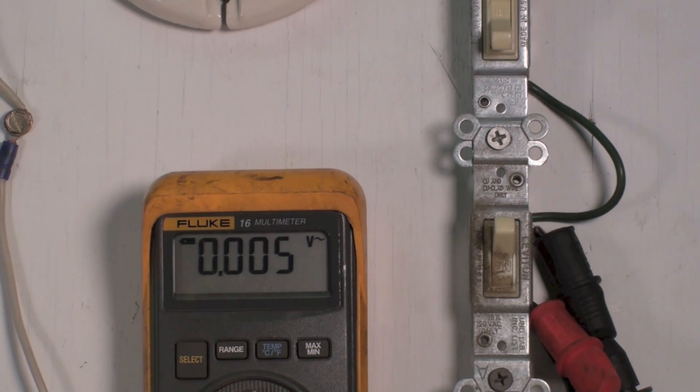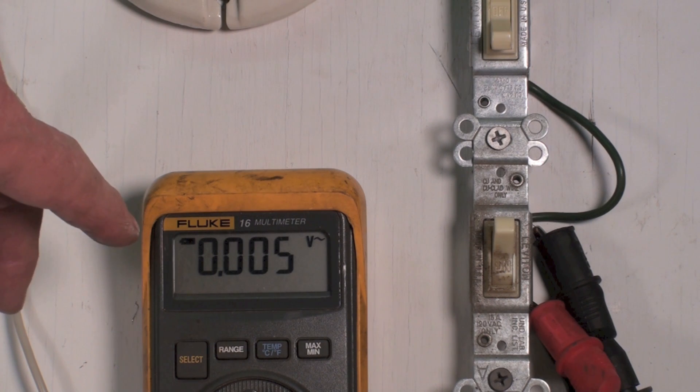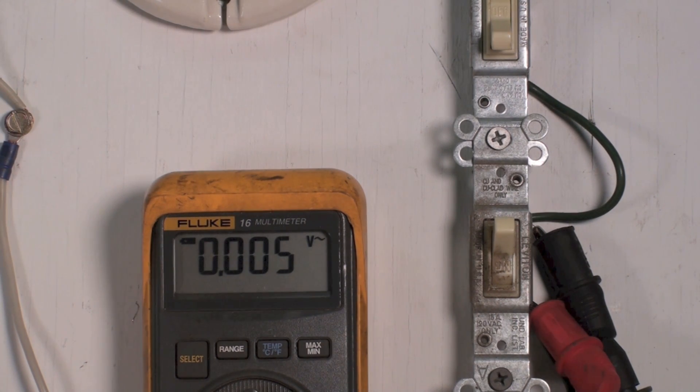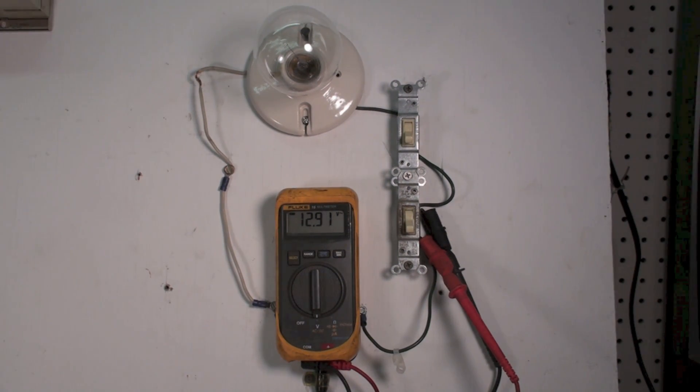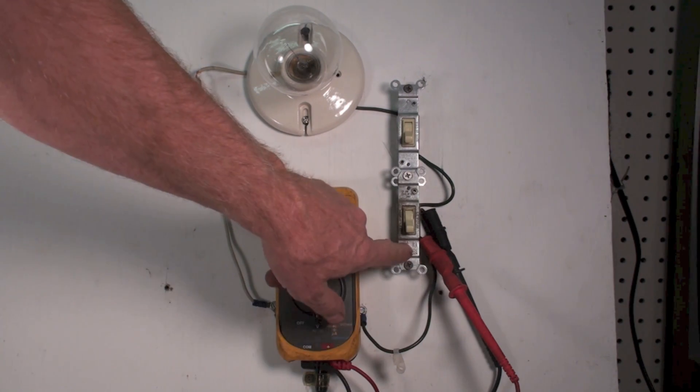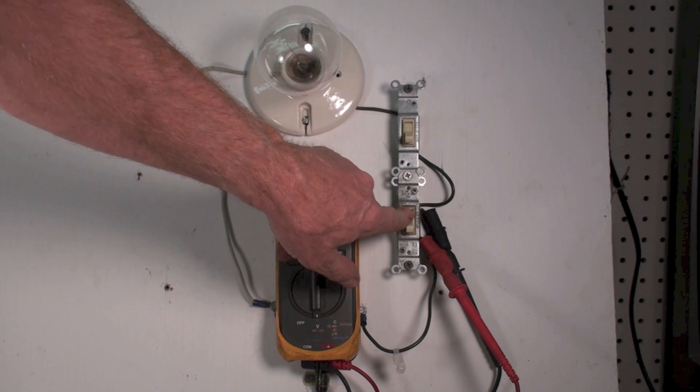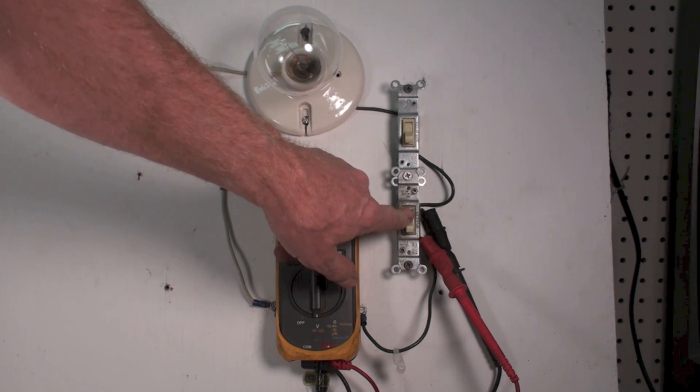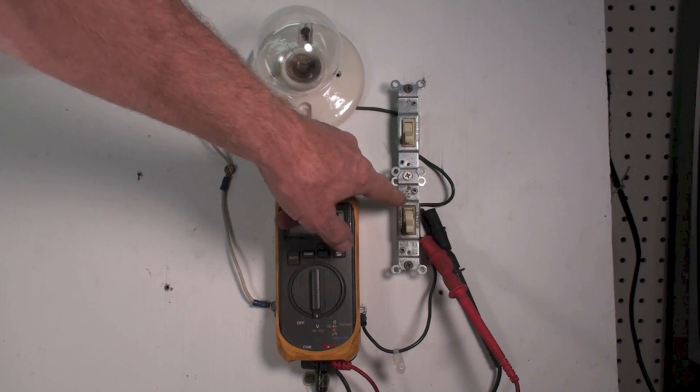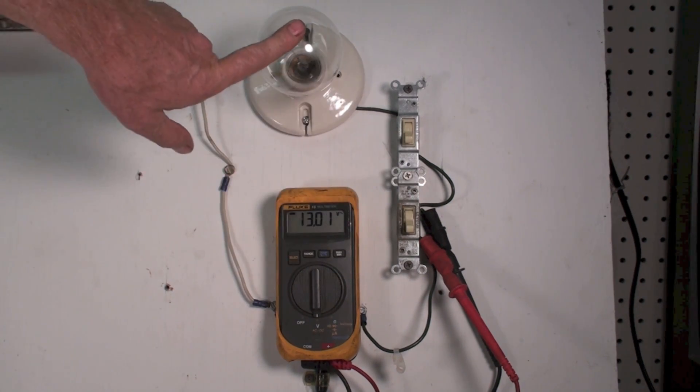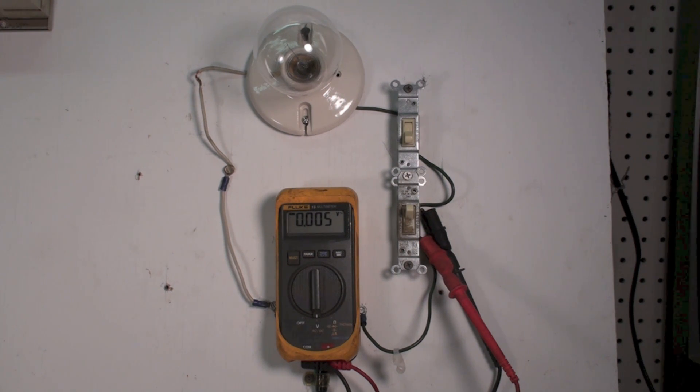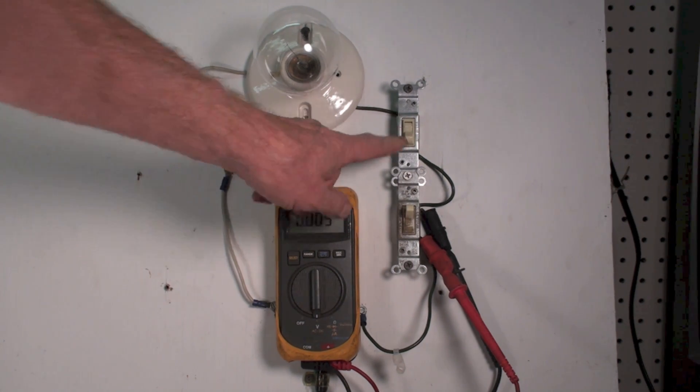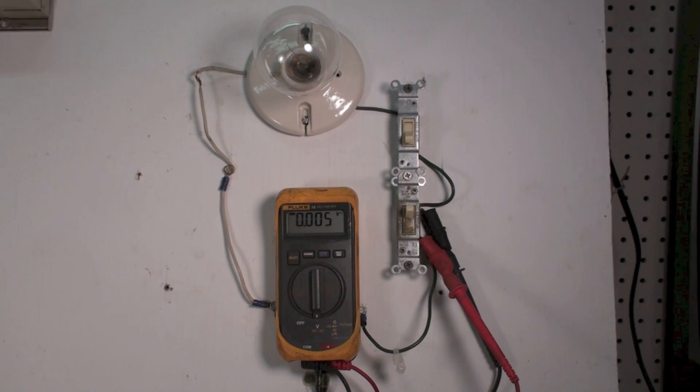Now I'm reading zero again, but the load's not working. If I turn this off, it still doesn't make any difference. Let's look at what's happening. The power is coming from here, it's going up to the switch. The switch is open and this switch is open, so it's going to read zero and the load's not going to work. Now I turn it on, it still reads zero because this switch is off.